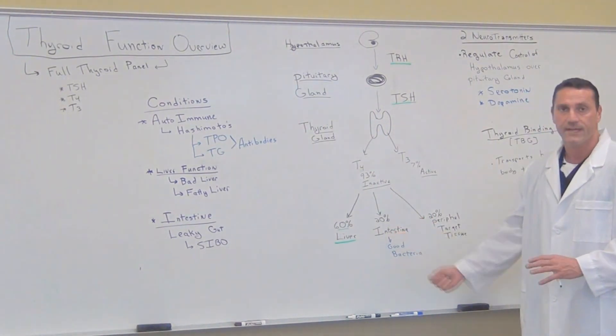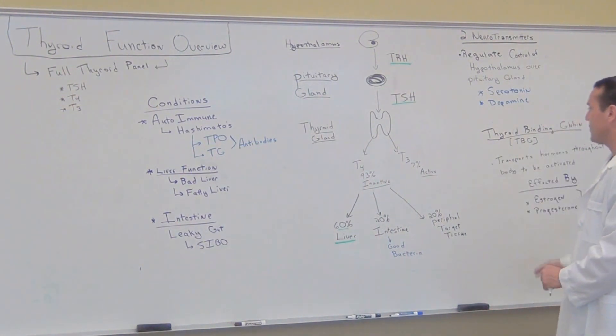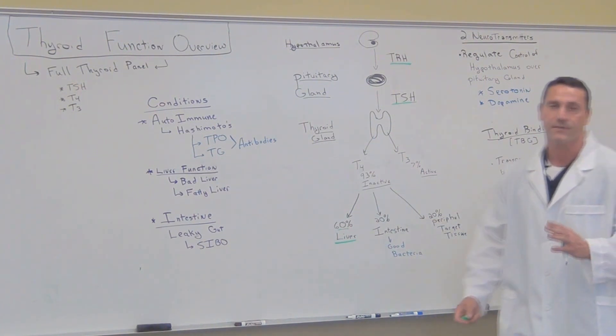Now, once the thyroid hormone is in the bloodstream, it's transported through what's called thyroid binding globulin, TBG. What that does, it transports the hormone throughout the body to be active.